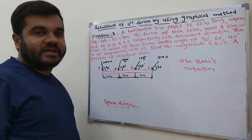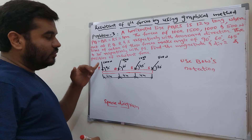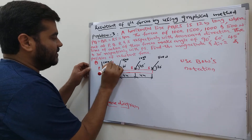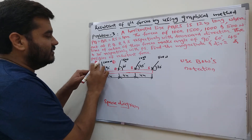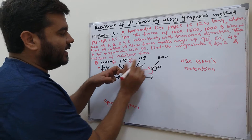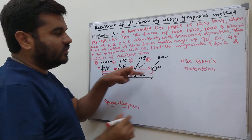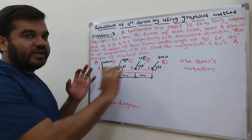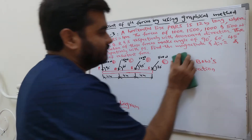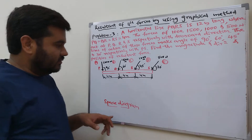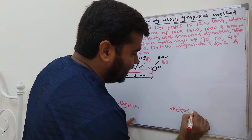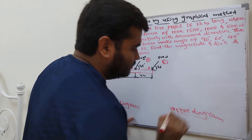Bow's notation requires you to give notation for the forces. For the first force at P, mark one side as A and the other as B — so force P is denoted by AB. Force Q is denoted by BC, force R is denoted by CD, and force S is denoted by DE. This is the Bow's notation. Now come to the vector diagram.